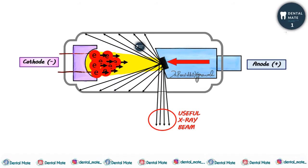In the previous video we saw that during the process of electron emission and conversion to X-ray photons from the anode, most of the high-speed electrons traveling from the filament to the target interact with the target electrons and release their energy as heat. Only 1% of these electrons actually reach the target and are converted into X-ray photons.